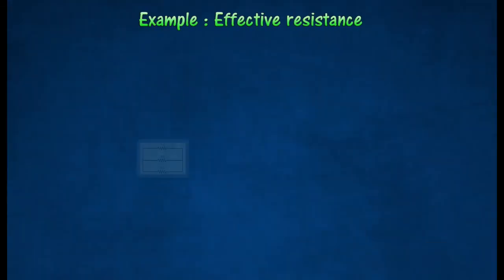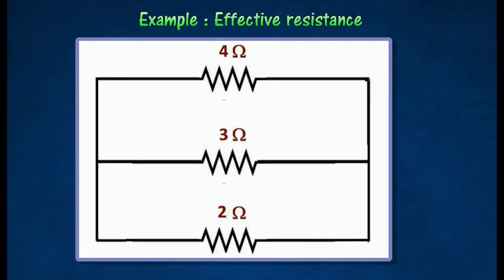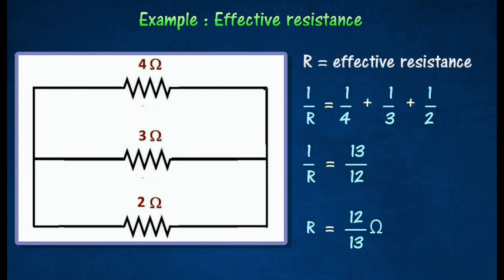Three resistors are connected in parallel as shown in the diagram. Calculate the effective resistance of the circuit. Let R be the effective resistance. Thus, the effective resistance can be calculated as follows.